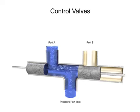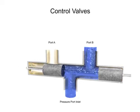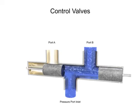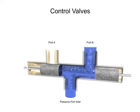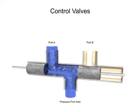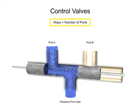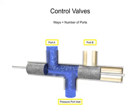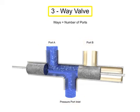Directional control valves are identified by the number of ways that fluid can flow and the number of positions the valve can produce. A way refers to the number of active porting connections called ports. This valve has three ports, so it is a three-way valve.